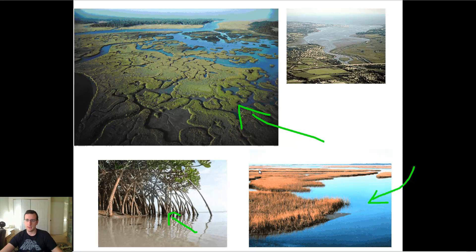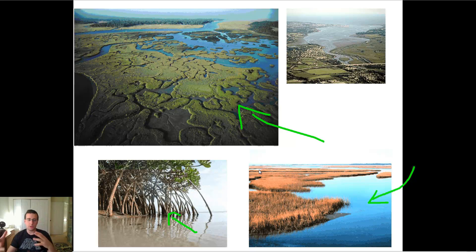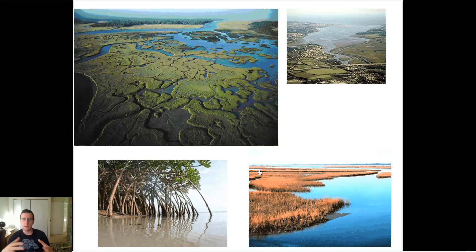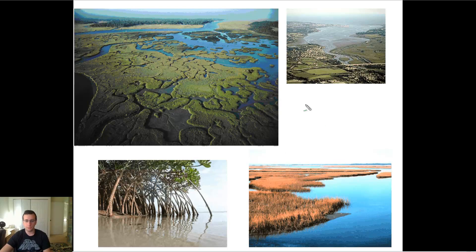Salt marshes are more grassland-like and more common in temperate areas where there's less nutrients, sunlight, and temperature. Both are estuaries — aquatic ecosystems with a mixture of salt water — and the plants and animals living there have to be able to adapt to that. Later in the year, we might talk about some of the adaptations peculiar to organisms that live in these kinds of environments.